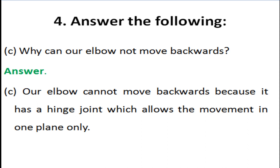Next question: why can our elbow not move backwards? Our elbow cannot move backwards because it has a hinge joint, which allows movement in one plane and one direction only.